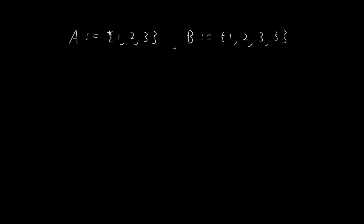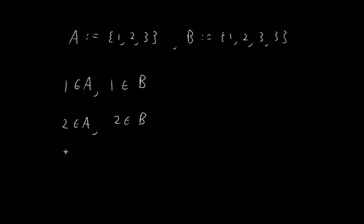First, let's check that every element in A is also an element in B. You can see that 1 is an element in A, and 1 is also an element in B. 2 is an element in A, and 2 is also an element in B. 3 is an element in A, and 3 is also an element in B. So every single element in A is also an element in B.